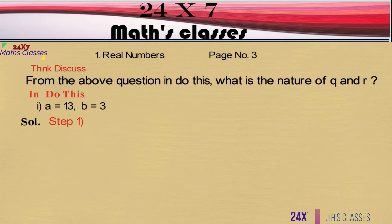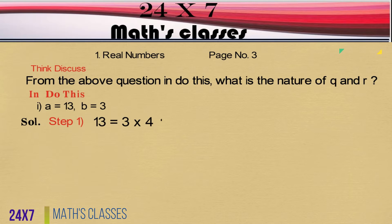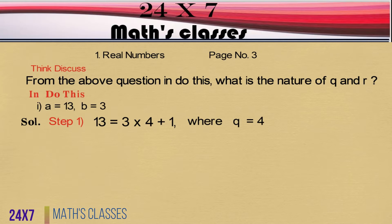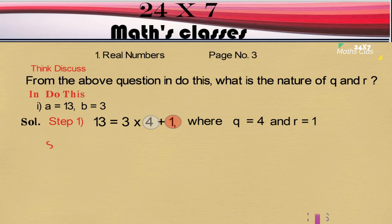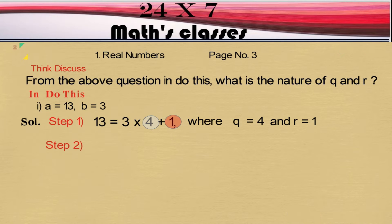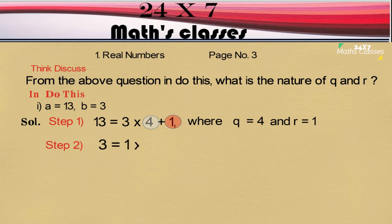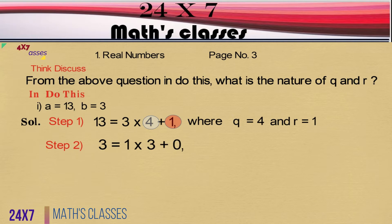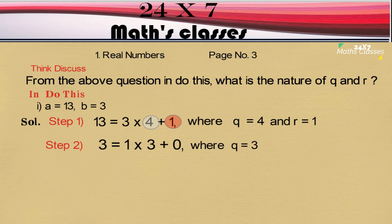In Do This, first problem: a is equal to 13 and b is equal to 3. After dividing 13 by 3, we can write it as 13 = 3 × 4 + 1, where q is equal to 4 and r is equal to 1. In step 2, we can write 3 = 1 × 3 + 0, where q is equal to 3 and r is equal to 0.